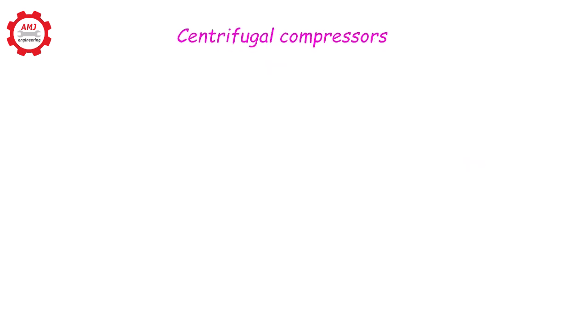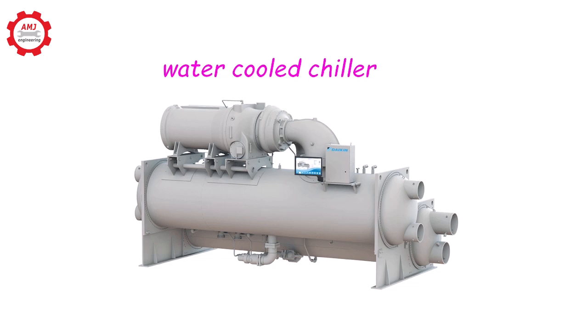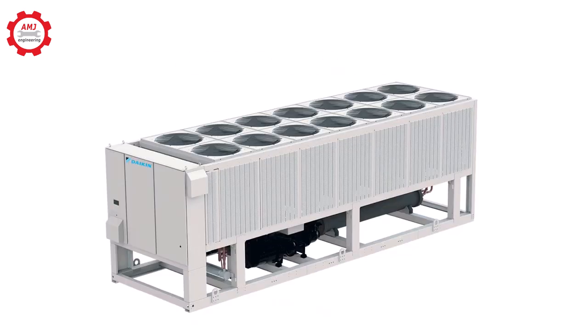Centrifugal compressors: The majority of centrifugal chillers are water-cooled and are often used for medium to large cooling loads from 200 to 6000 tons of refrigeration. You will rarely find a centrifugal compressor in air-cooled chillers.